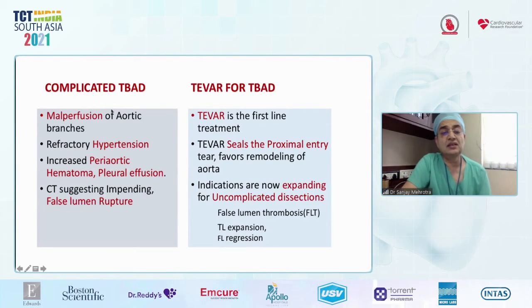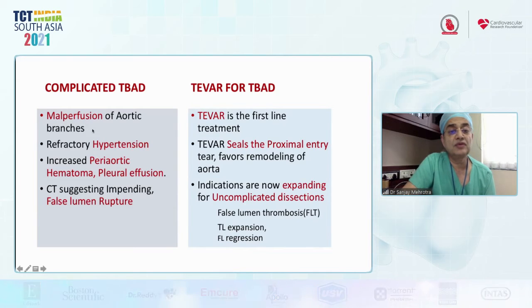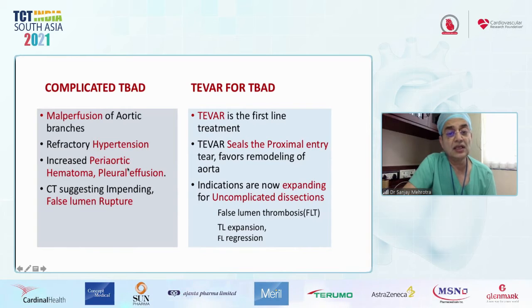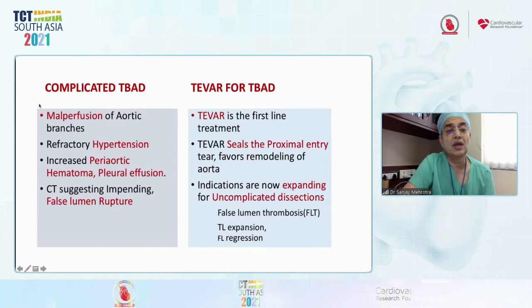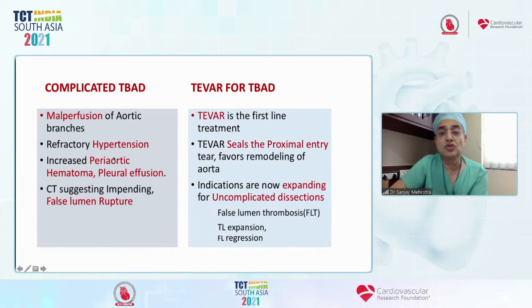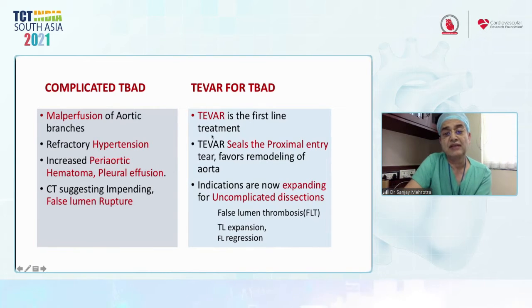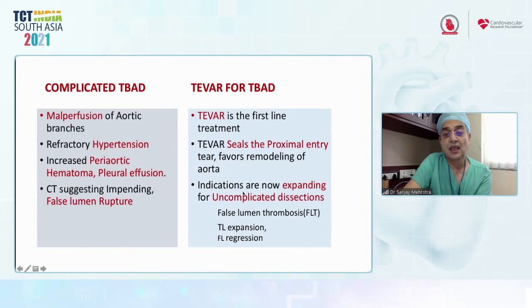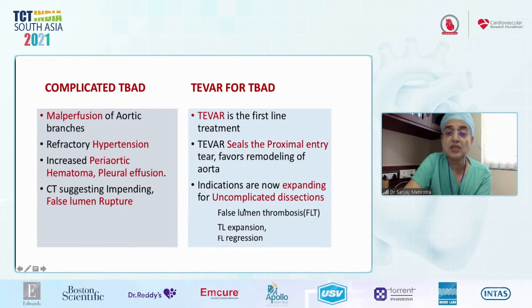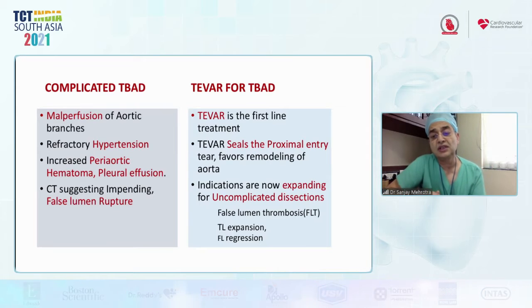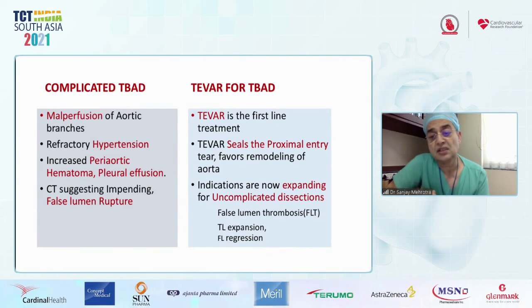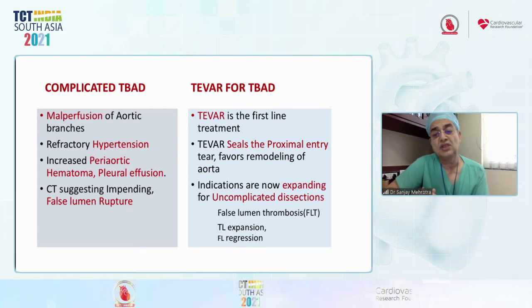Complicated type B aortic dissection involves malperfusion of aortic branches, refractory hypertension, increased periaortic hematoma or pleural effusion, and CT suggesting impending rupture — these require treatment. TEVAR is the first line of treatment: it seals the proximal entry tear and favors aortic remodeling. Indications have expanded to even uncomplicated dissection, because early remodeling reduces the risk of false lumen enlargement and future aneurysm formation.